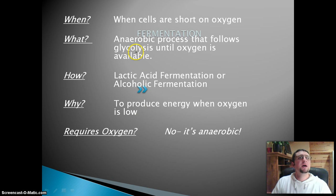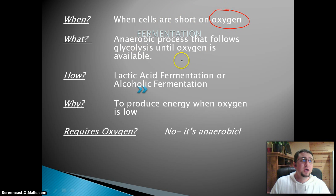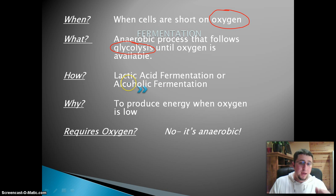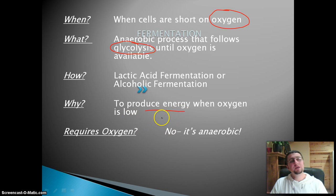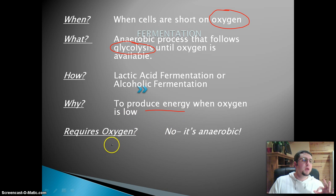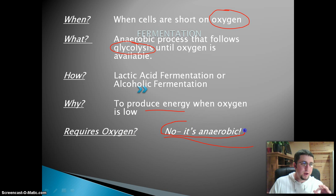So when does fermentation occur? It occurs when your cells are low on oxygen, during a process called glycolysis. We can have two types: lactic acid fermentation and alcoholic fermentation. The goal is to produce energy when oxygen is low. The key point is that fermentation does not require oxygen — so it's what's called anaerobic.